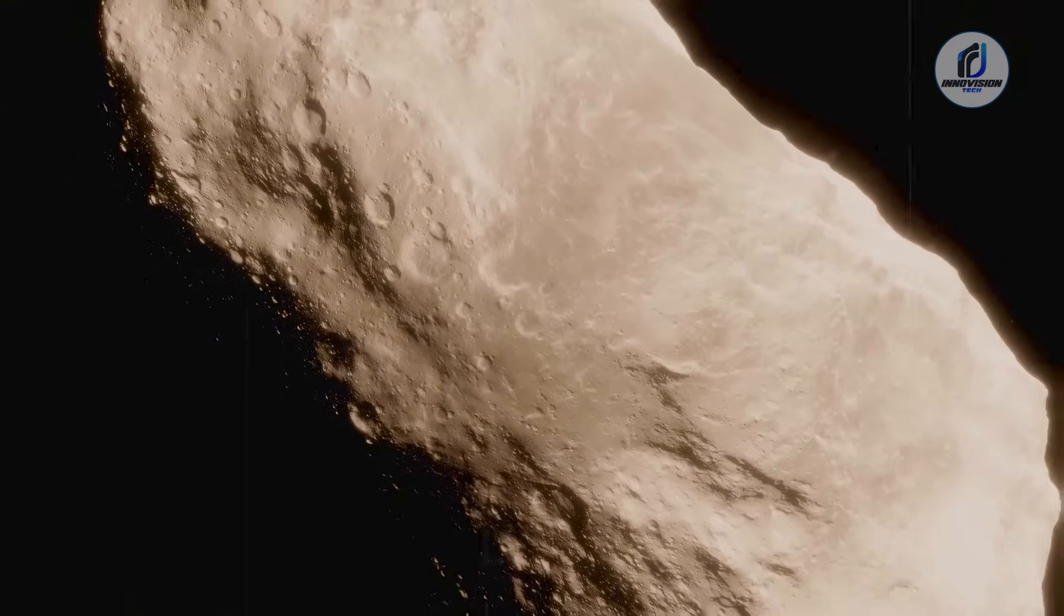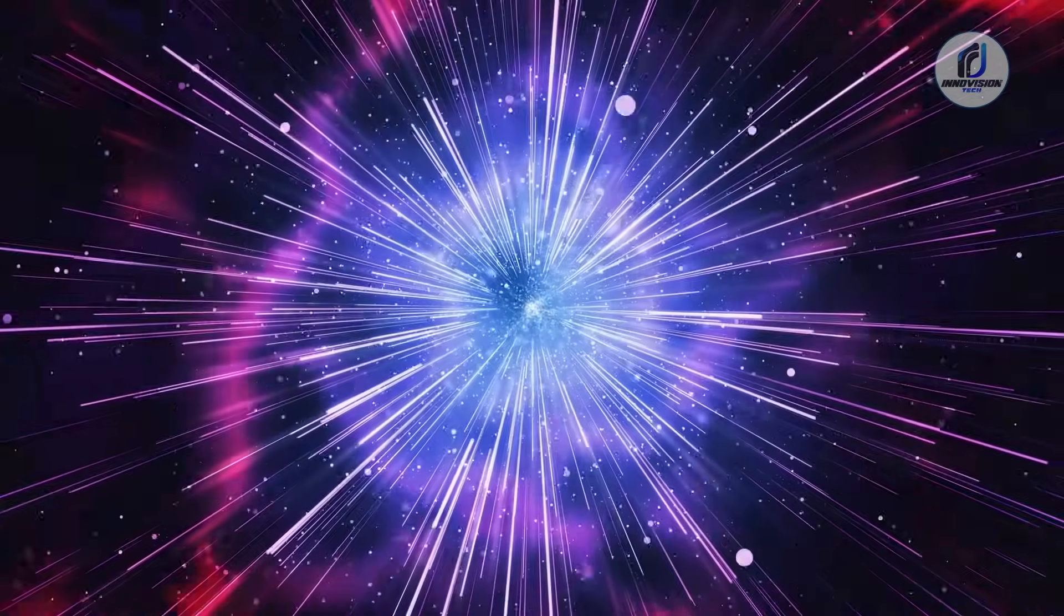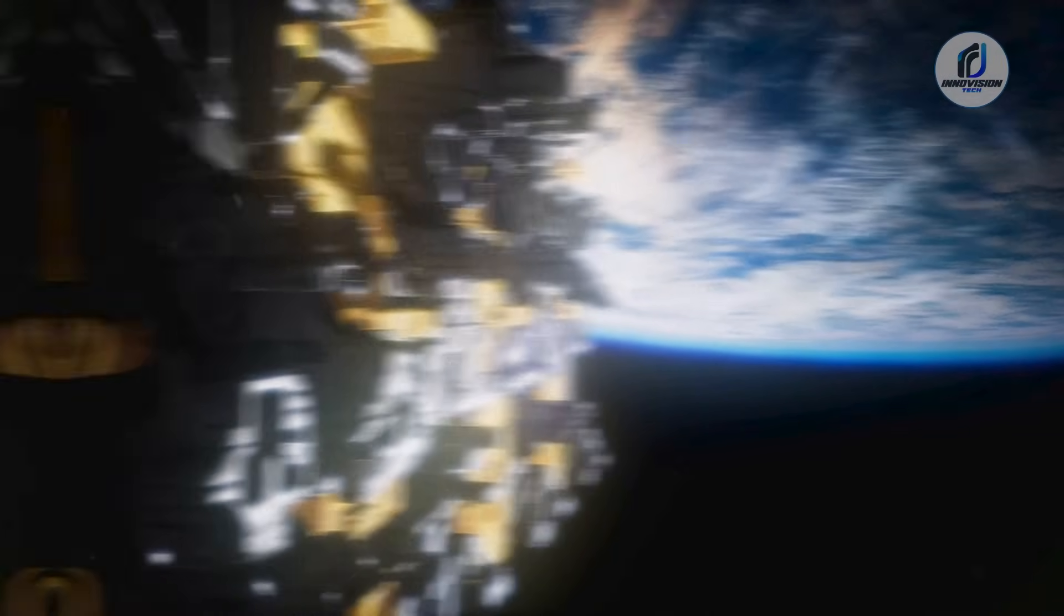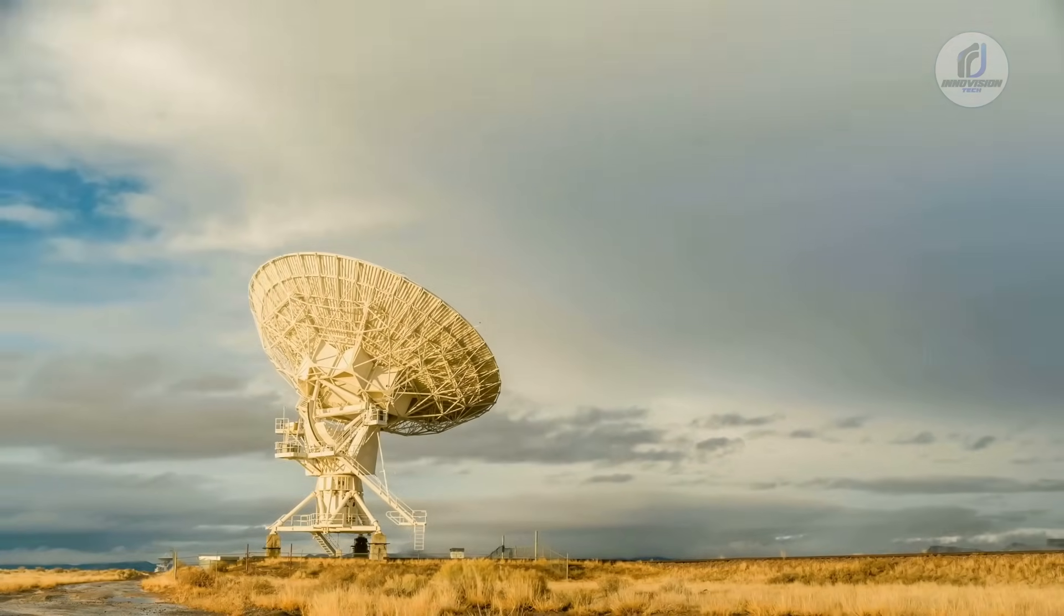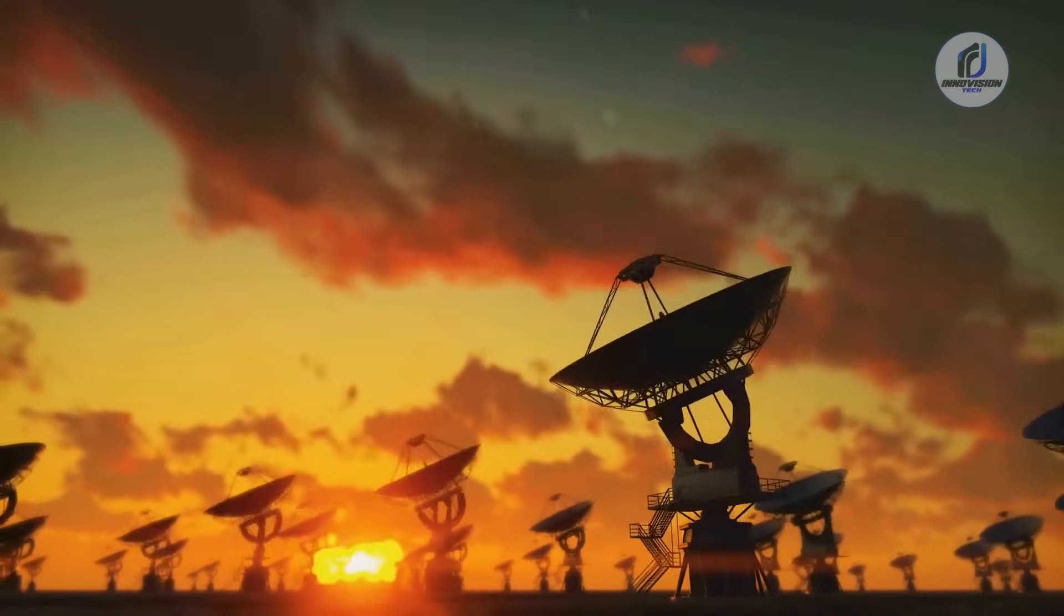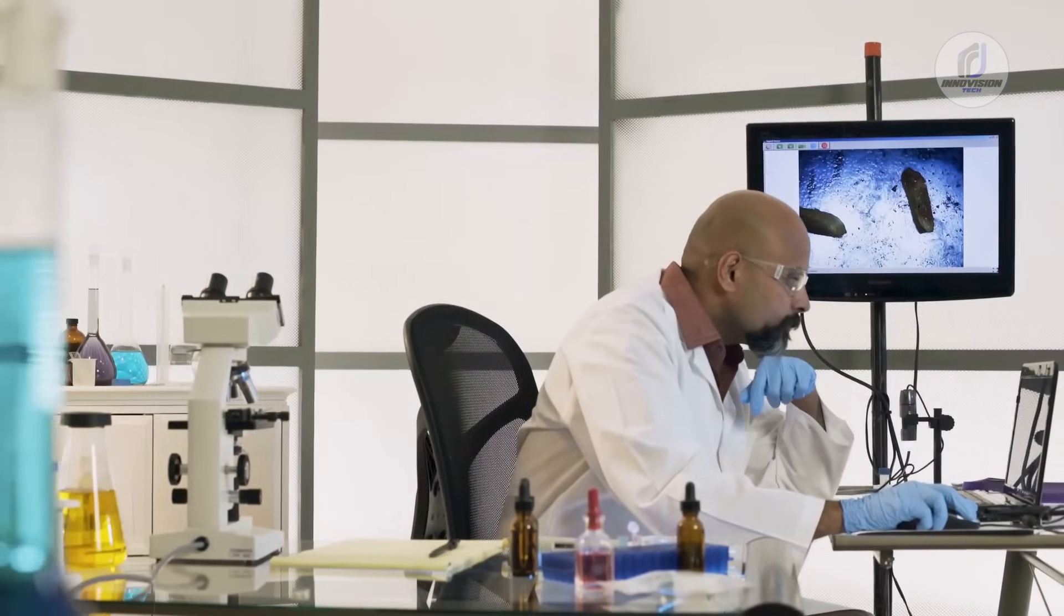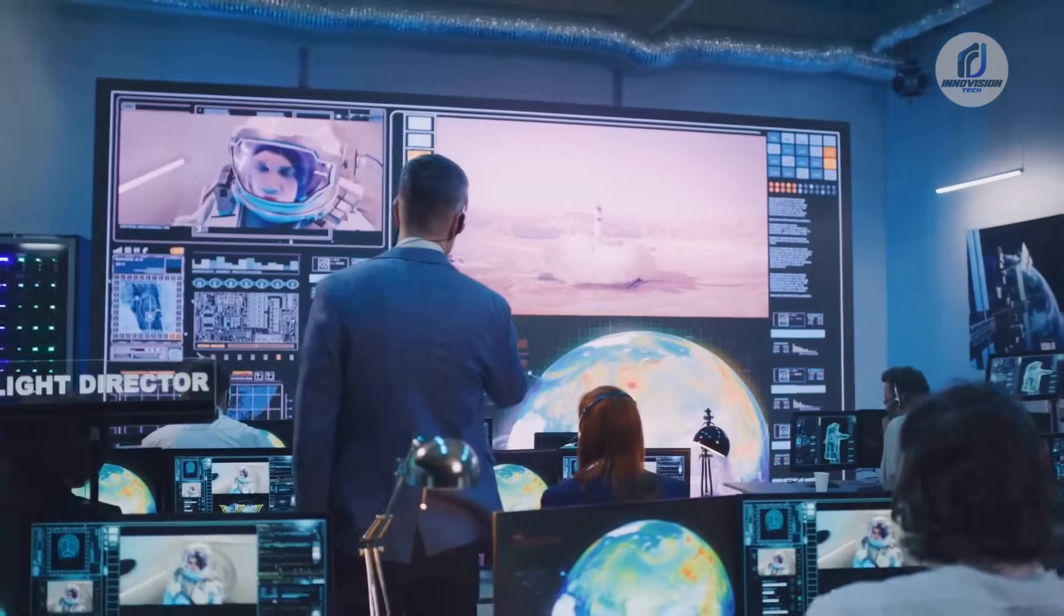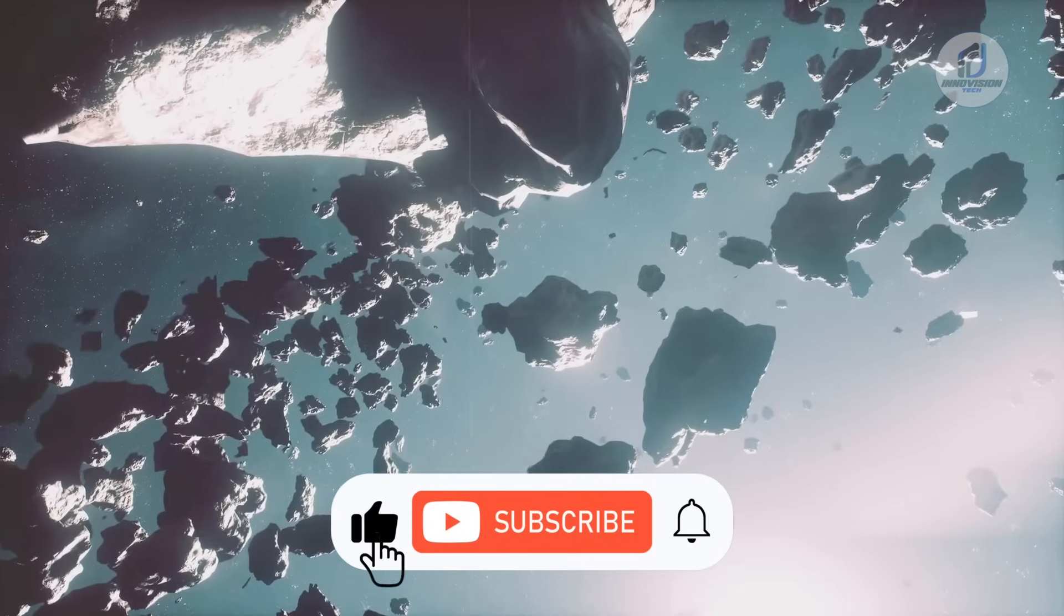Right now we stand at a crossroads. Is 3I Atlas a product of nature at its most extreme and exotic, formed in the heart of a cosmic catastrophe we can barely imagine? Or are we looking at something else entirely, a piece of technology, a messenger, or a calling card from a civilization beyond our own? The data from the Very Large Telescope and the James Webb Space Telescope has broken our existing models and forced us to confront possibilities once relegated to science fiction. The search for answers is just beginning, and the next discovery could change everything we know about our place in the universe.